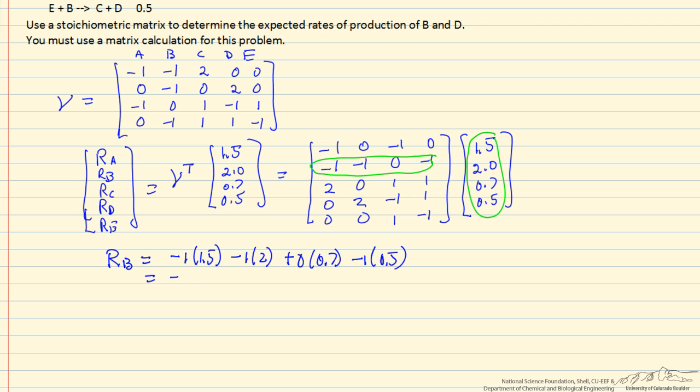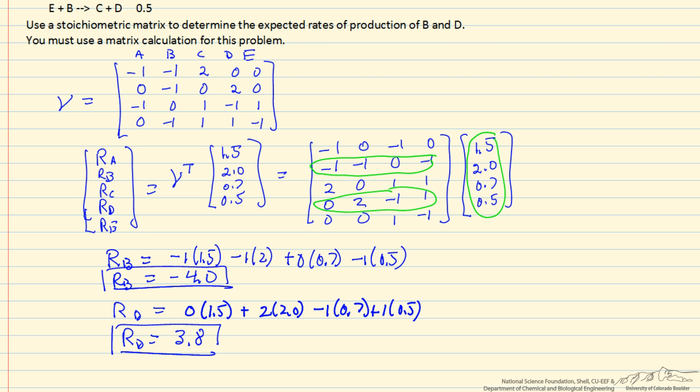This is minus 4.0. So the rate of production of D, same idea, now this column gives the rate of production of D. I don't have units here; the units would be the same units that the rates are, so it's easy in this case to not worry about the units.